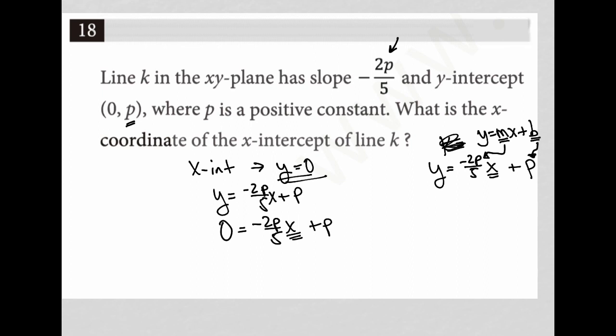And now I'm just solving for X. I'm going to subtract P from both sides, and I'm left with negative P equals negative 2P over 5X. And then I'm going to multiply both sides by the reciprocal, which is 5 over negative 2P on this side, also 5 over negative 2P on this side. This allows me to cross-cancel these terms out, leaving me with just an X on the right-hand side.